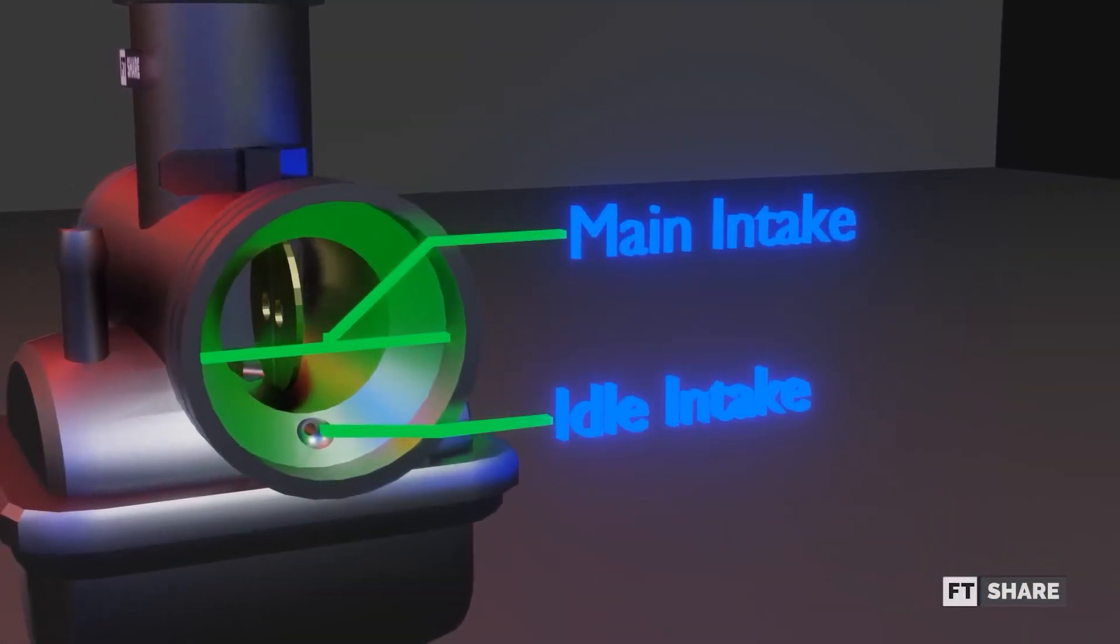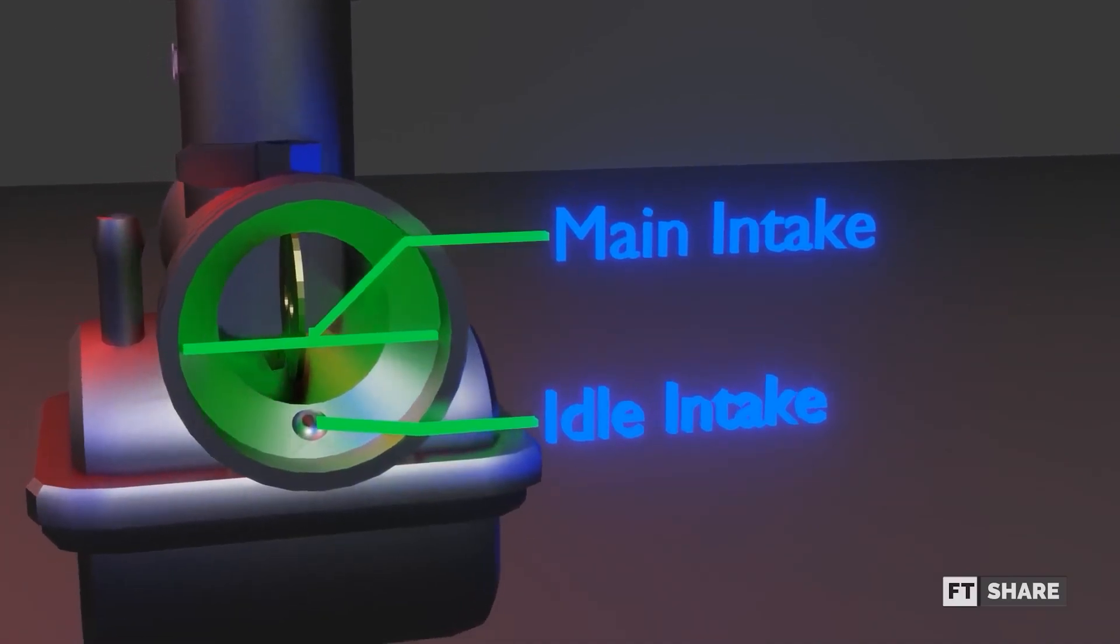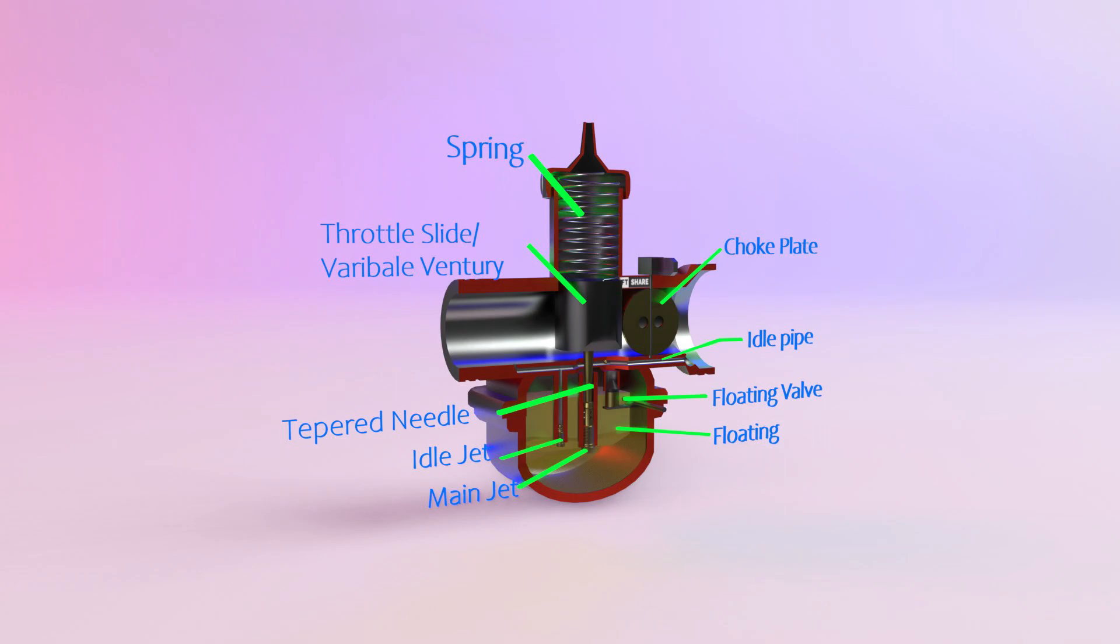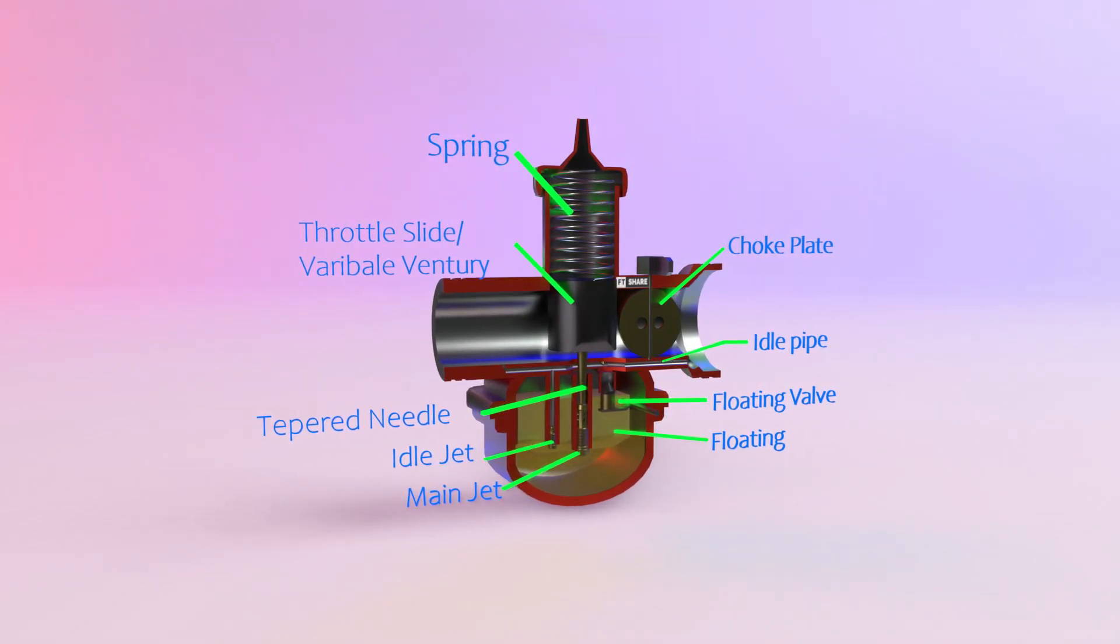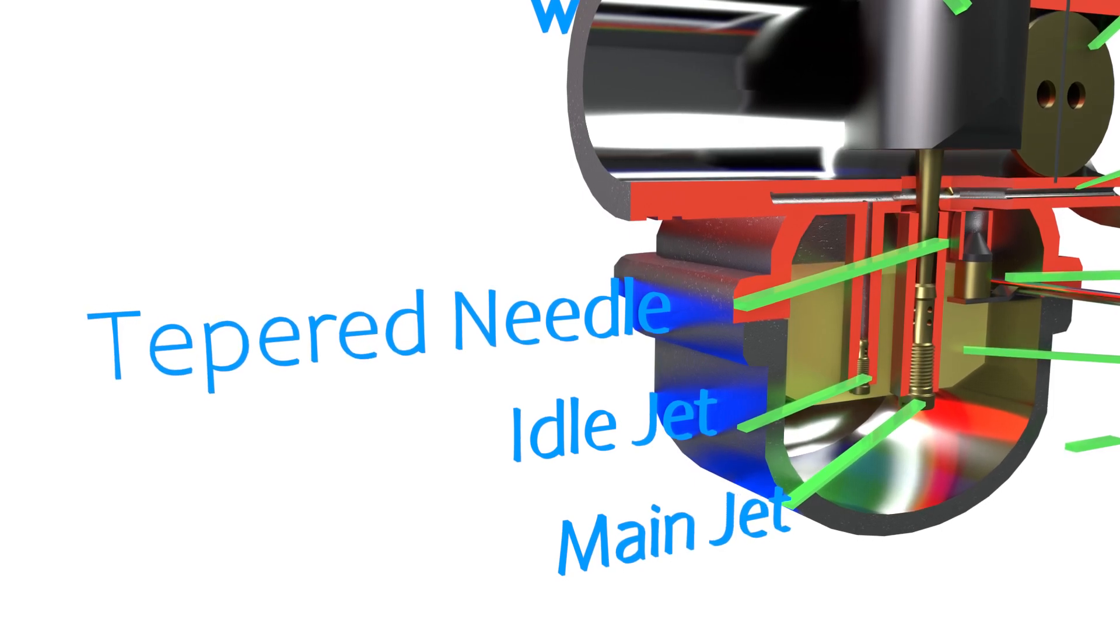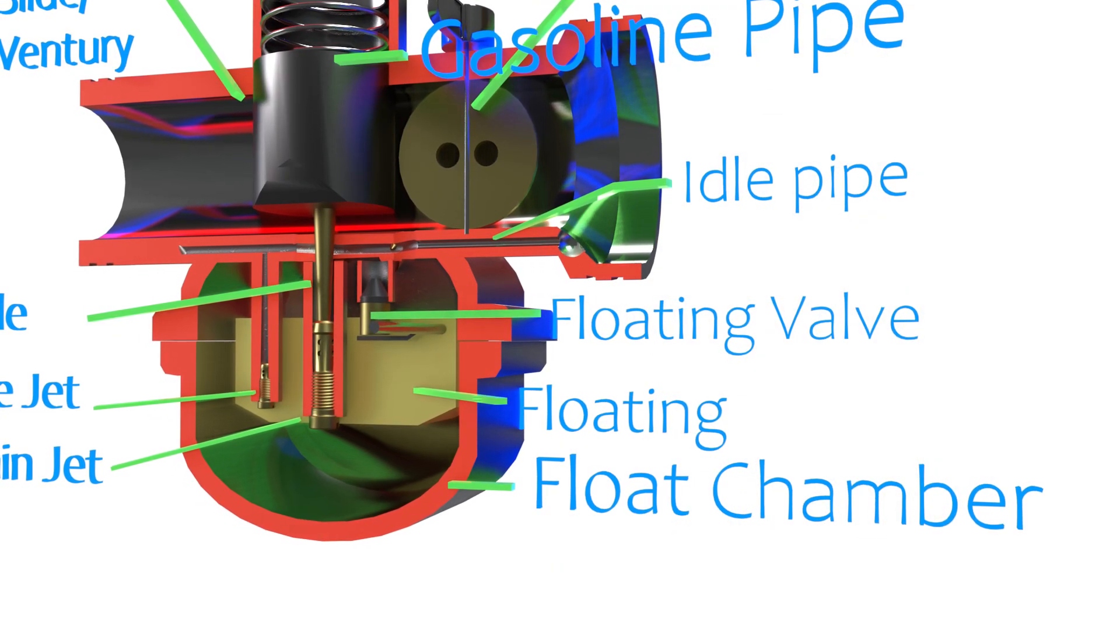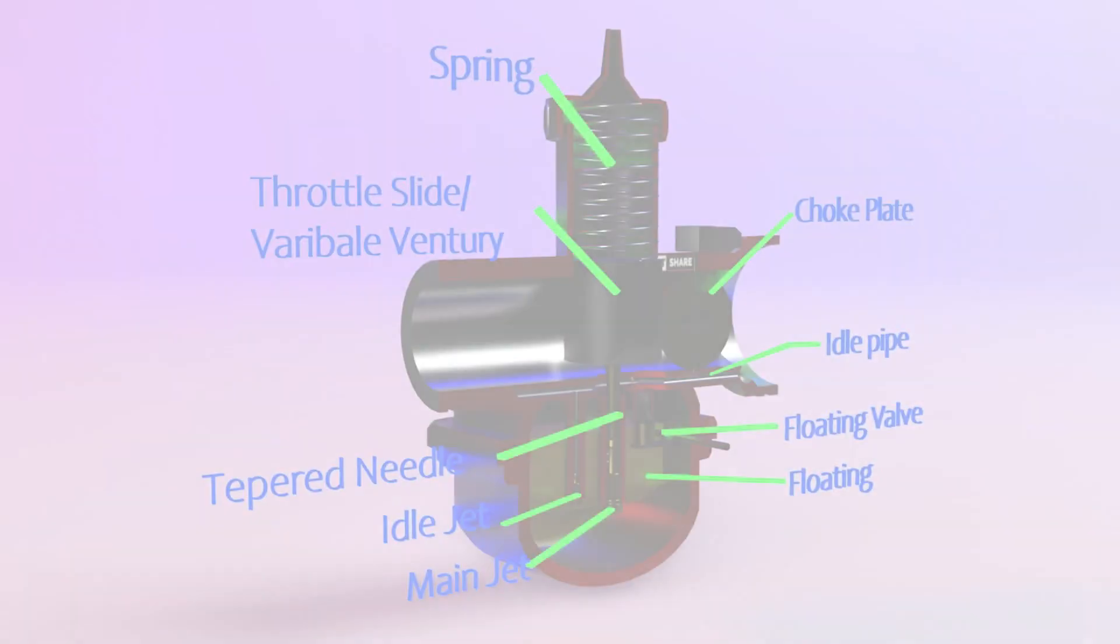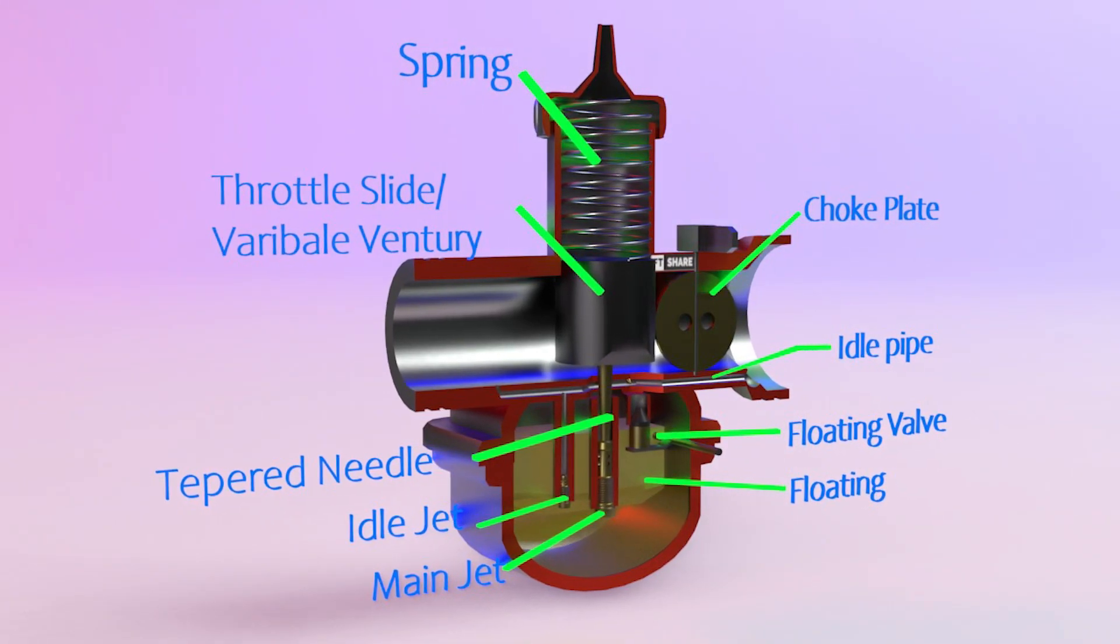From the front, the air intake and idle air intake holes are visible. Moving further into the carburetor, we can see the spring, variable venturi, tapered needle or jet needle, main jet, idle jet, float, floating valve, idle pipe or ventilation from air, from the float chamber and the choke plate. These are the parts of the carburetor.